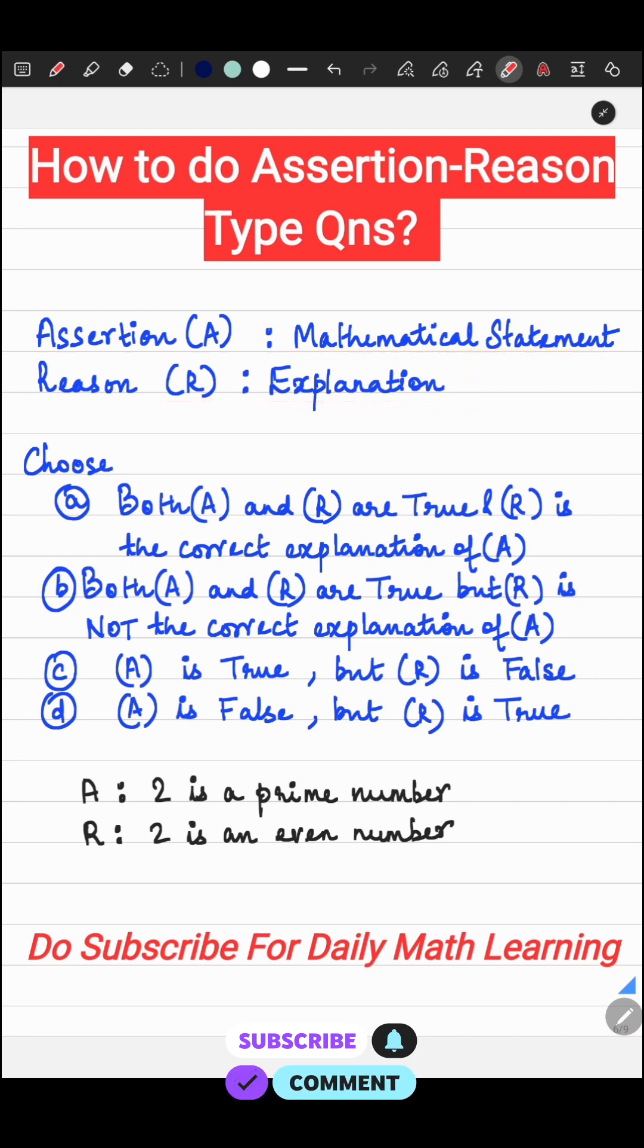You will choose A if both A and R—assertion is A, reason is R—if both are true and the reason R is the correct explanation for A, then you will choose A.